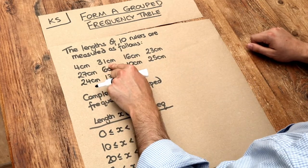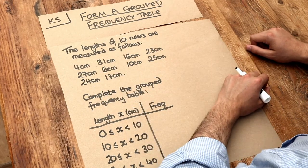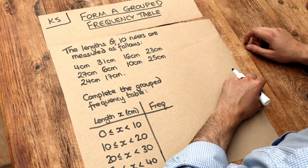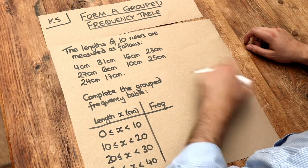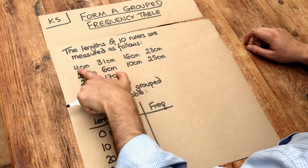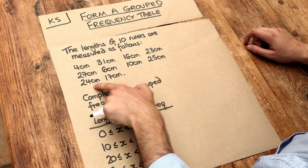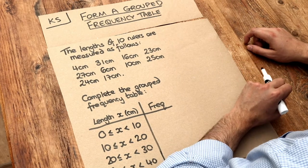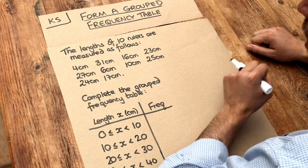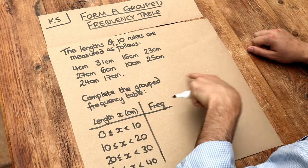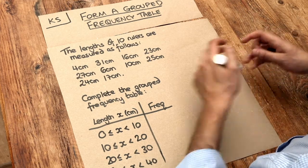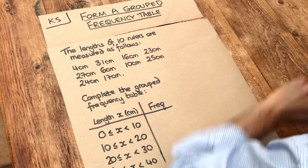We've got 4 centimeters, 31 centimeters, etc. And we want to complete the following grouped frequency table. Now we use a grouped frequency table if there's lots of different values, because can you see there's no duplicates here, there's no length of a ruler that occurs more than once. If we tried to show that as a frequency table, it'd be a rubbish table because each of those lengths would each have a frequency of 1. So what we tend to do is group the values in different intervals, in different ranges.